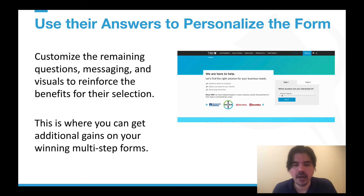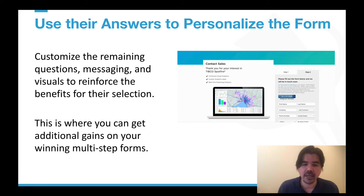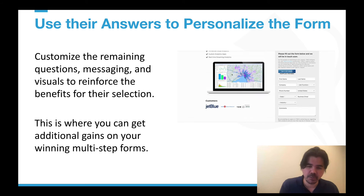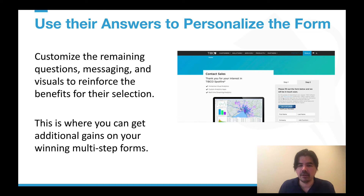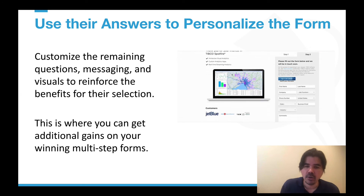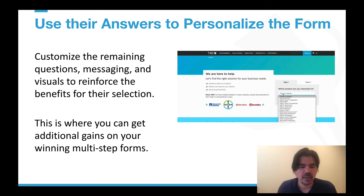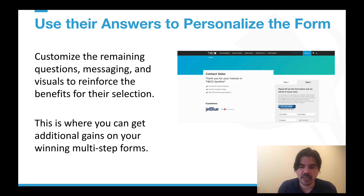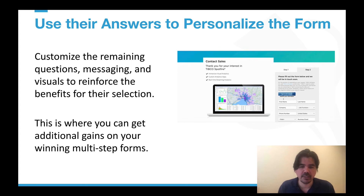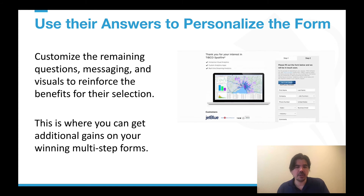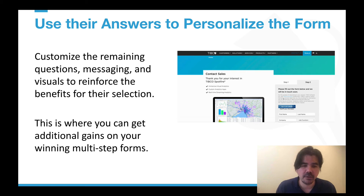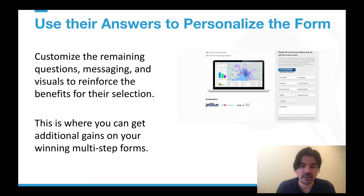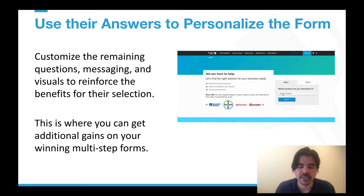Next up, what gets more interesting is actually using these answers to personalize the rest of the actual form experience. If they express certain product interests, or indicate they're from a small or enterprise business, you want to reinforce that you're the right business for them — here are the benefits of that product, or why you're great for SMB, enterprise, a specific industry, or type of role. On the right you see a simple example where on a contact us form, we ask for their product interest in step one, and then personalize the rest of the form based on that answer. We've done this with a couple of clients and we've seen pretty nice positive upticks in conversion rates from this simple concept.